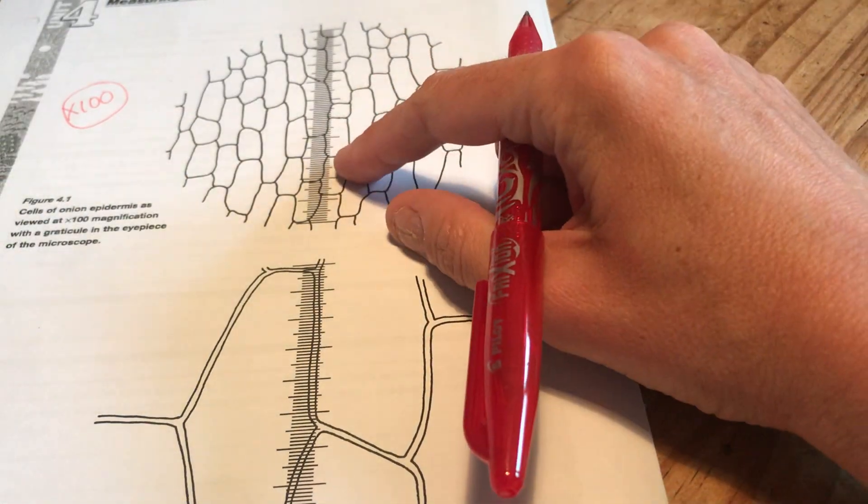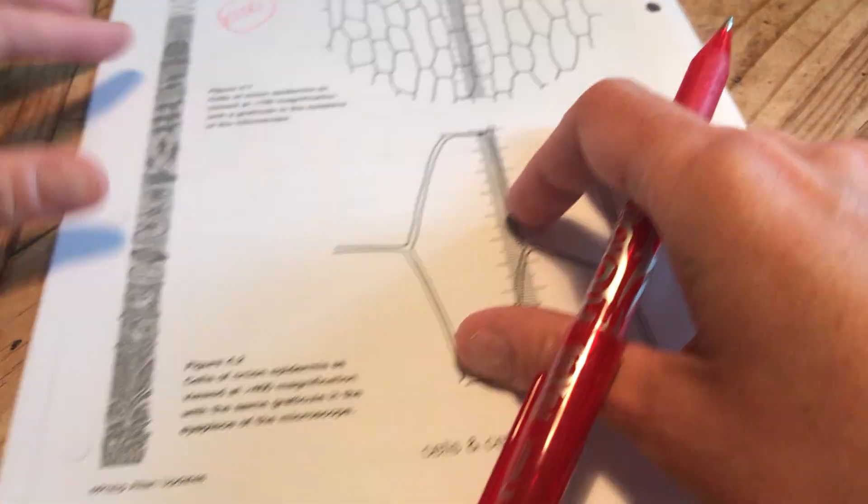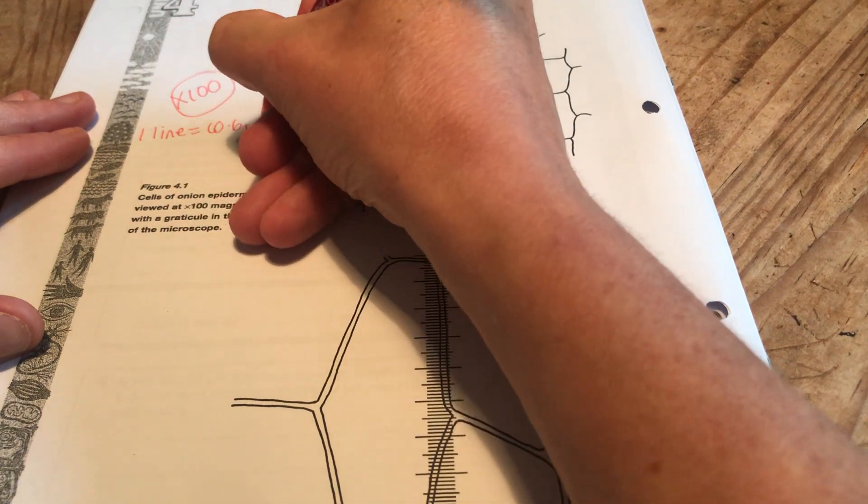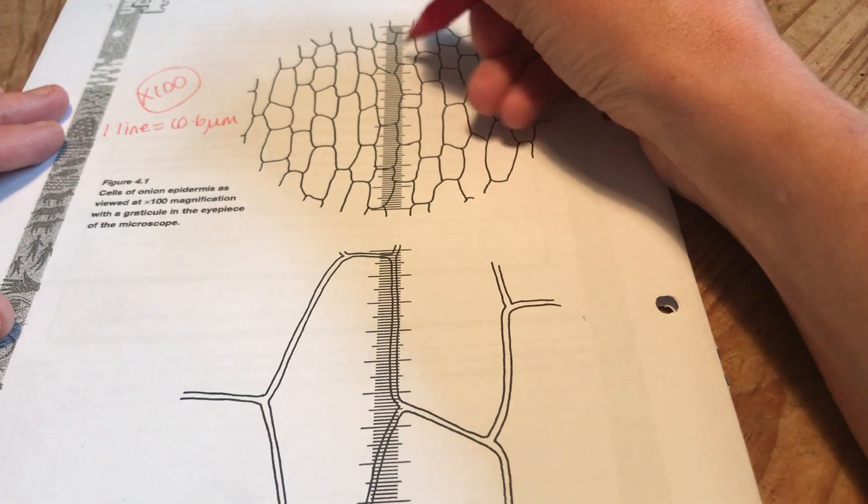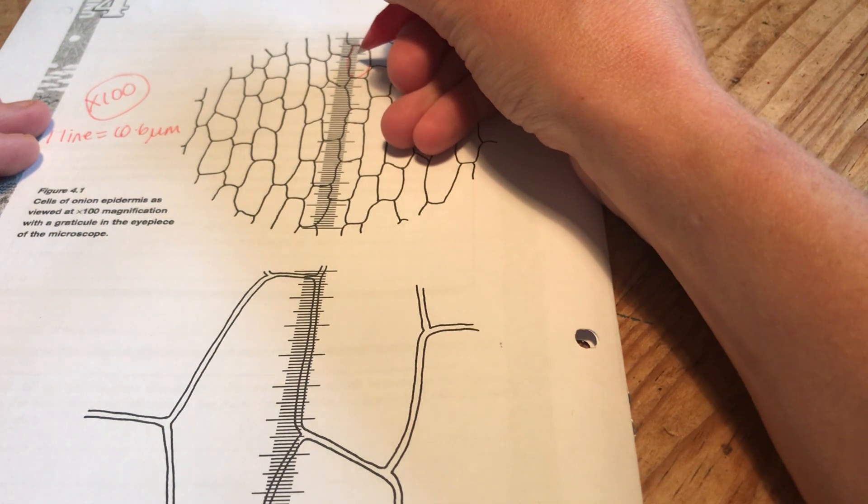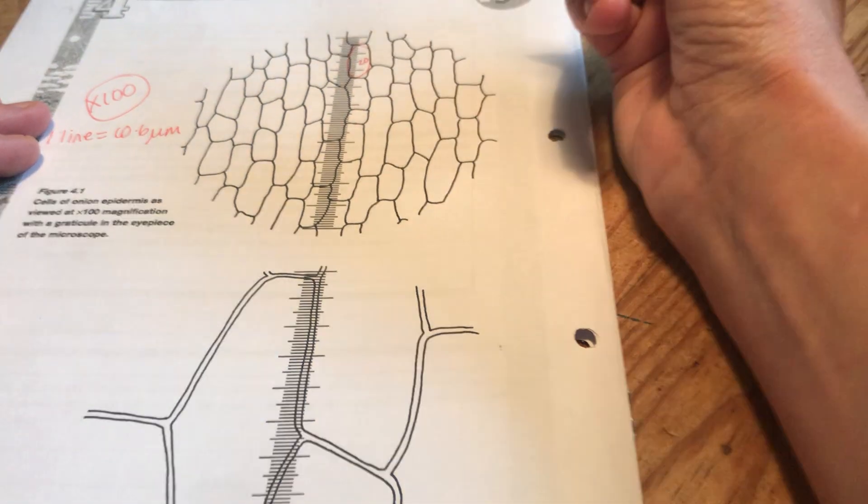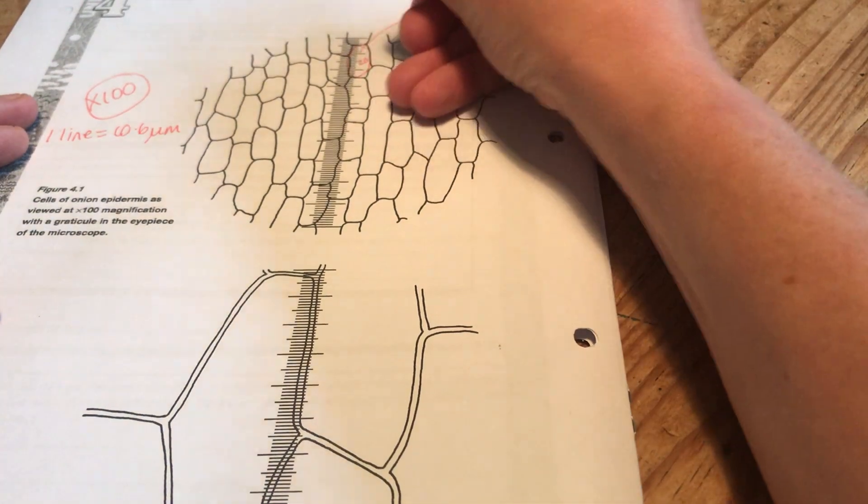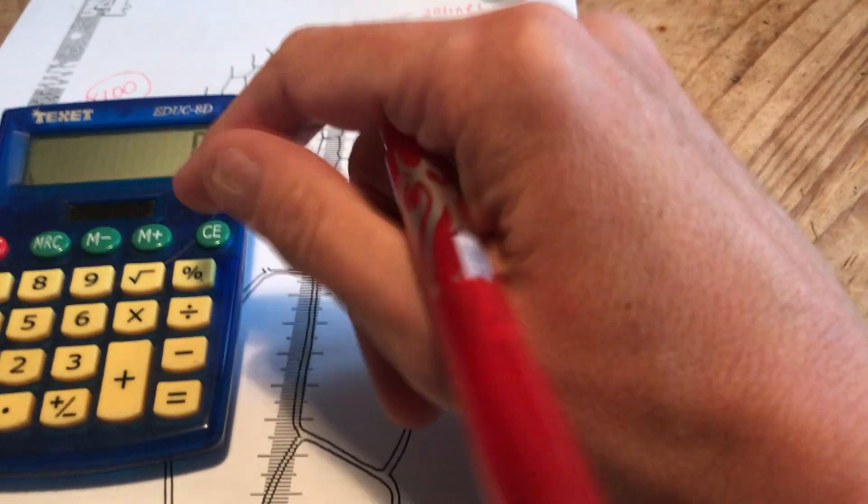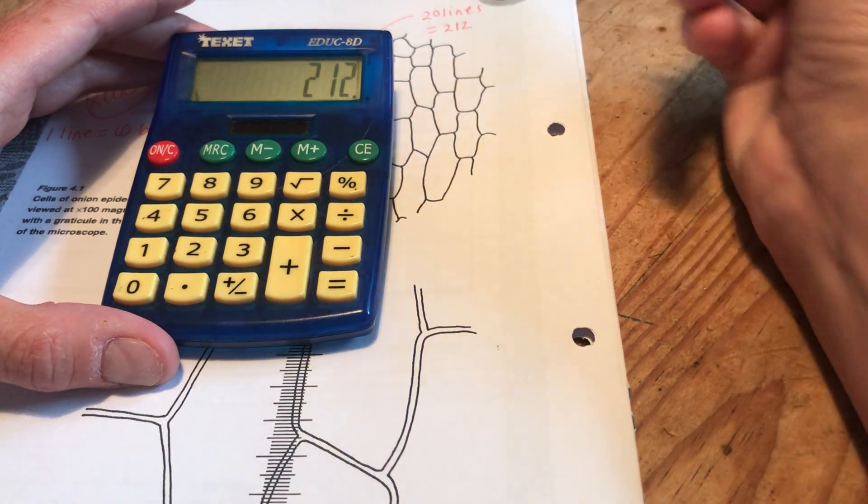I know on this diagram the length of one line, one line represents 10.6 micrometers. So I could say well okay let's do a mean of a few cells. Let's take this cell here and that cell there if I count it is 5, 10, 15, 20 little lines big. So that cell there if it's 20 lines and each line is worth 10.6 micrometers.